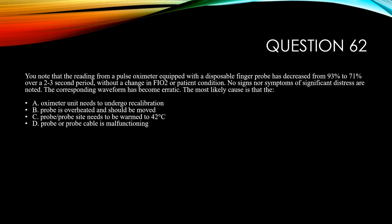Question 62. You note the reading from a pulse oximeter equipped with a disposable finger probe has decreased from 93 to 71 over a two-to-three second period without a change in FiO2 or patient condition. No signs or symptoms of significant distress are noted. The corresponding waveform has become erratic. Most likely cause is: A, the oximeter needs recalibration. B, probe is overheated and should be removed. C, the probe site needs to be warmed to 42 degrees. And D, the probe or probe cable is malfunctioning.